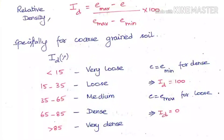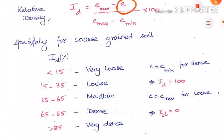Relative density is specially used for coarse grain soil. When ID is less than 15 the soil is very loose; 15 to 35 is loose; 35 to 65 is medium; 65 to 85 is dense; and greater than 85 is very dense. For a denser soil, E will be very low because the soil is densely packed and voids are very less. So E is nearly equal to E_min, making (E_max minus E_min) / (E_max minus E_min) equal to 1, giving ID = 100.